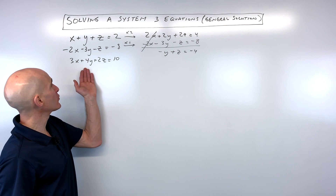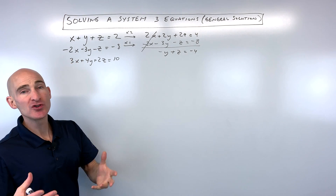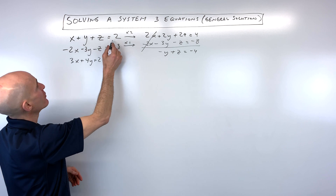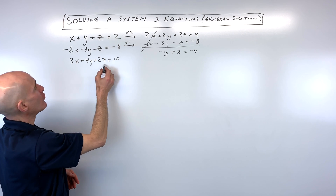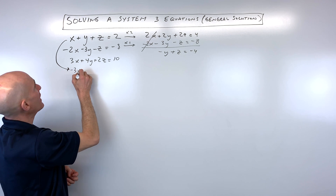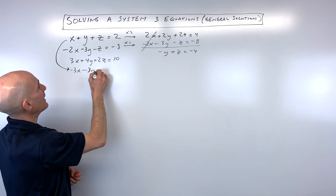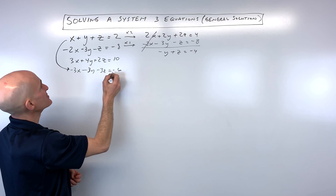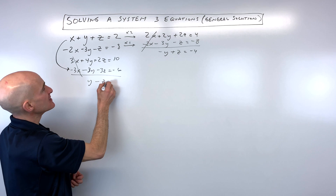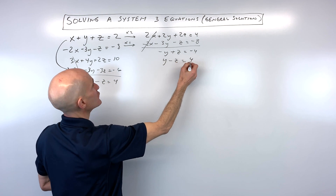Now we want to use the third equation as well — we can combine it with the first one. I'm going to multiply the top equation by negative three and leave the bottom one as it is. So multiplying by negative three gives us negative 3x minus 3y minus 3z equals negative six. When we add straight down, the x's cancel and we get y minus z equals four.